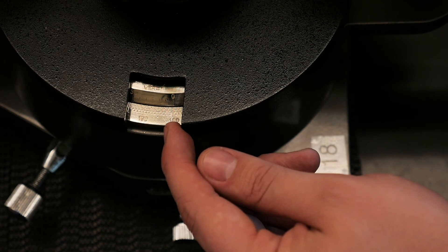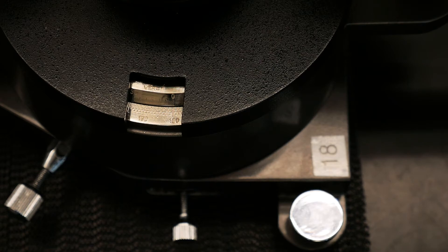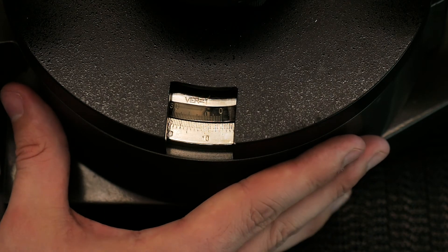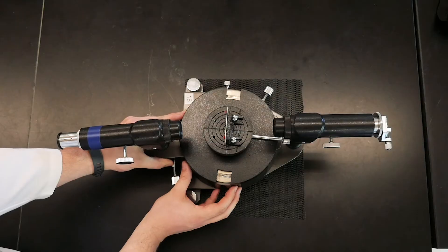The angle can be read by looking for the point where the zero on the top scale crosses the bottom scale. Here you can see that the reading is about 5.2 degrees, so we'll adjust to zero.